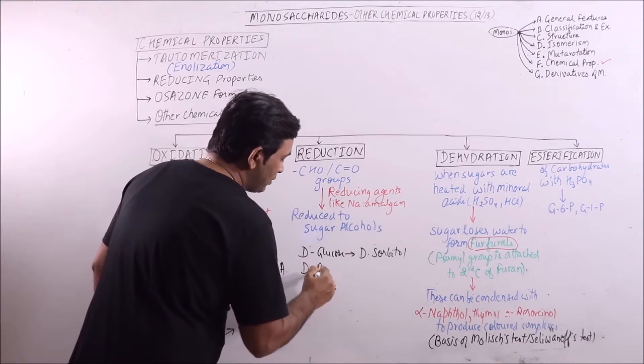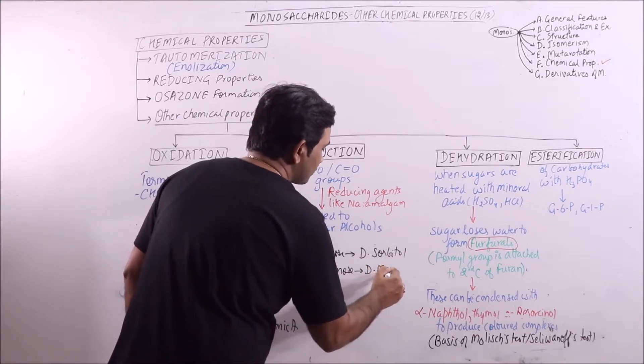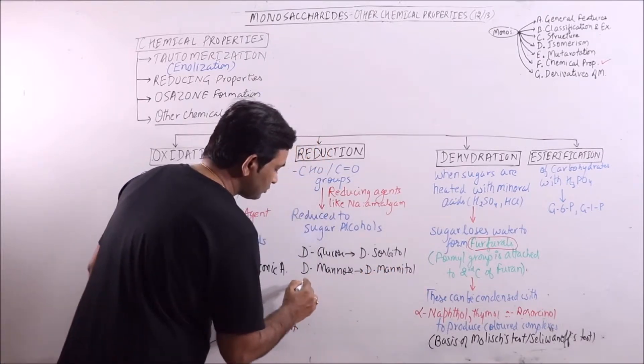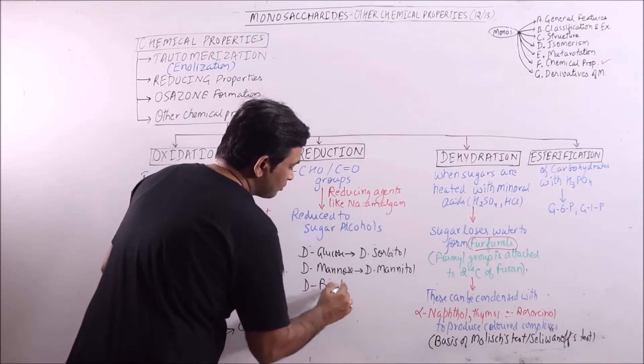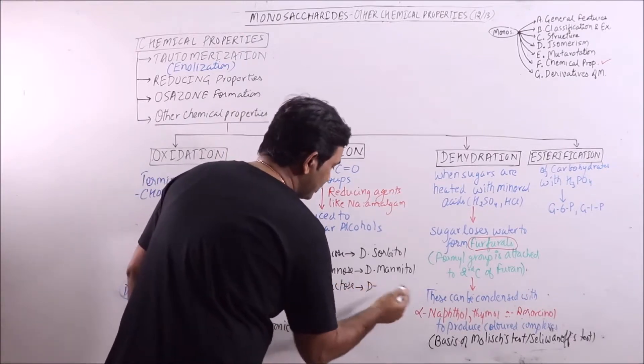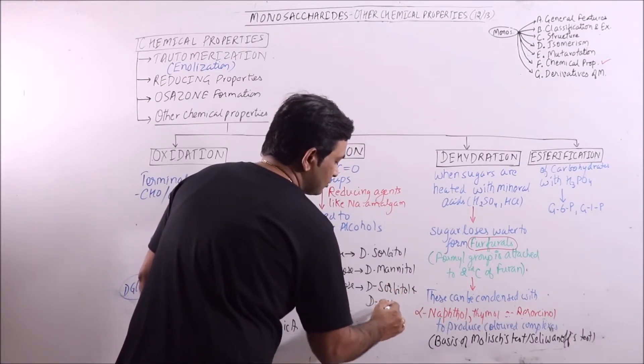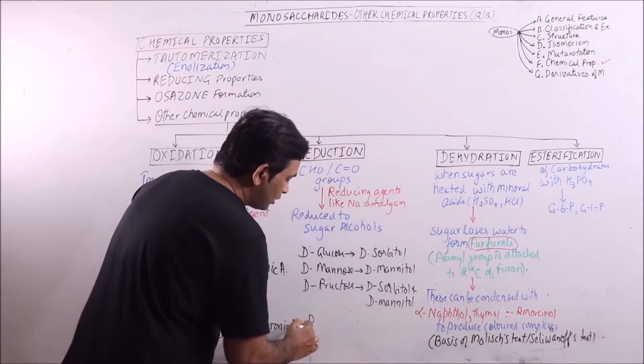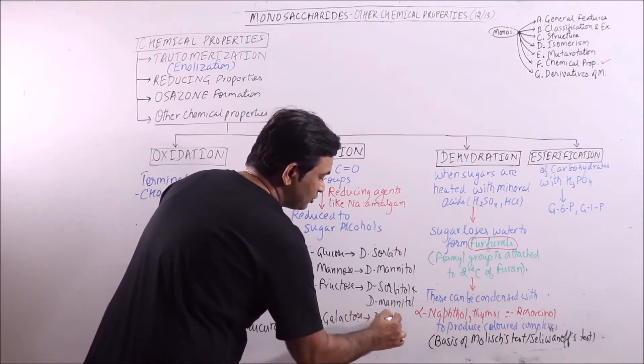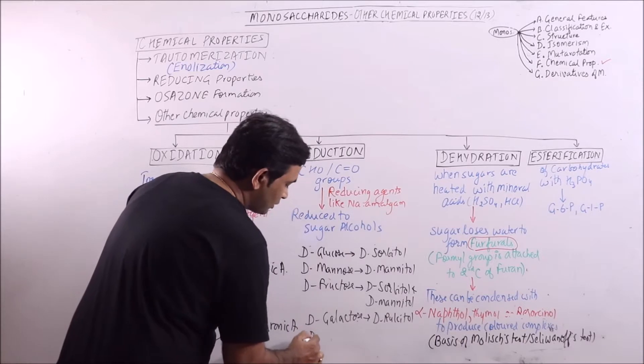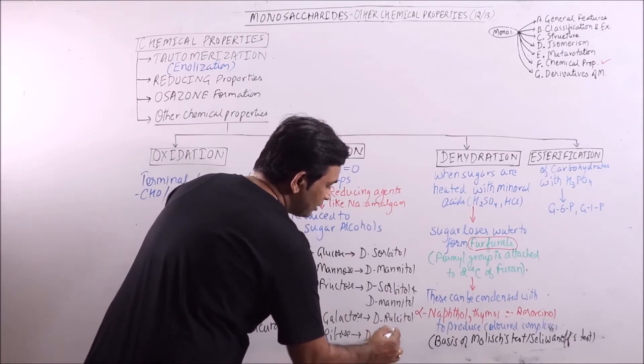If D-mannose is taken then it can be reduced to D-mannitol. If fructose is taken, it is reduced to D-mannitol. If ribose is taken then it can be reduced to ribitol.